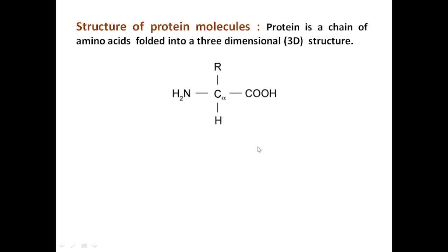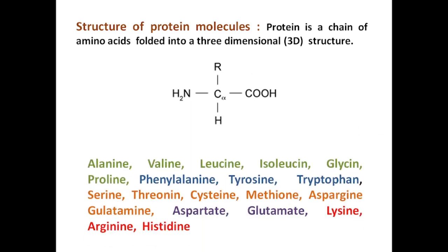There are 20 types of amino acids commonly found in proteins, each with a different side chain. The names of the 20 amino acids are: alanine, valine, leucine, isoleucine, lycine, proline,